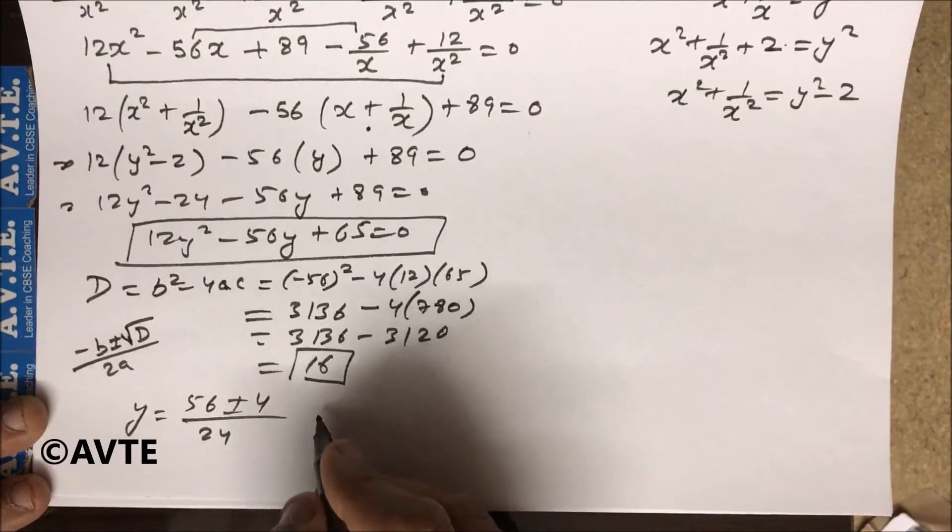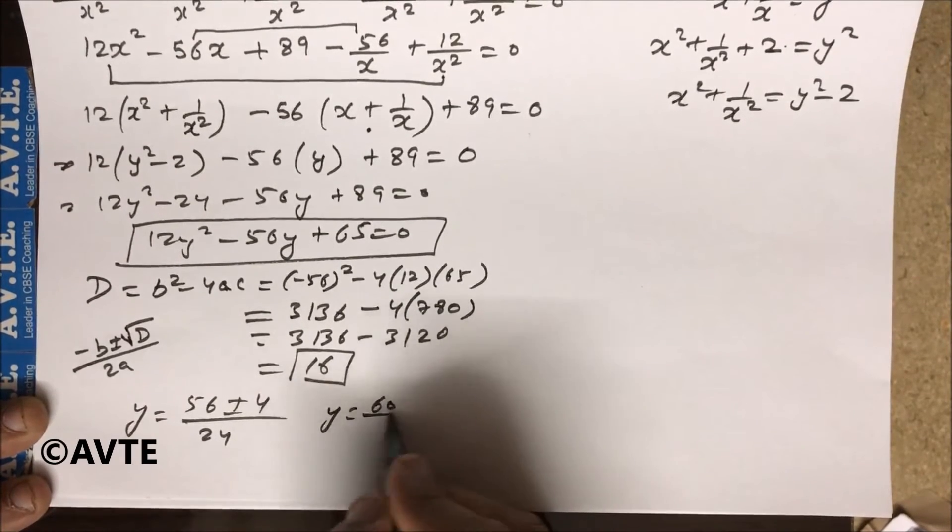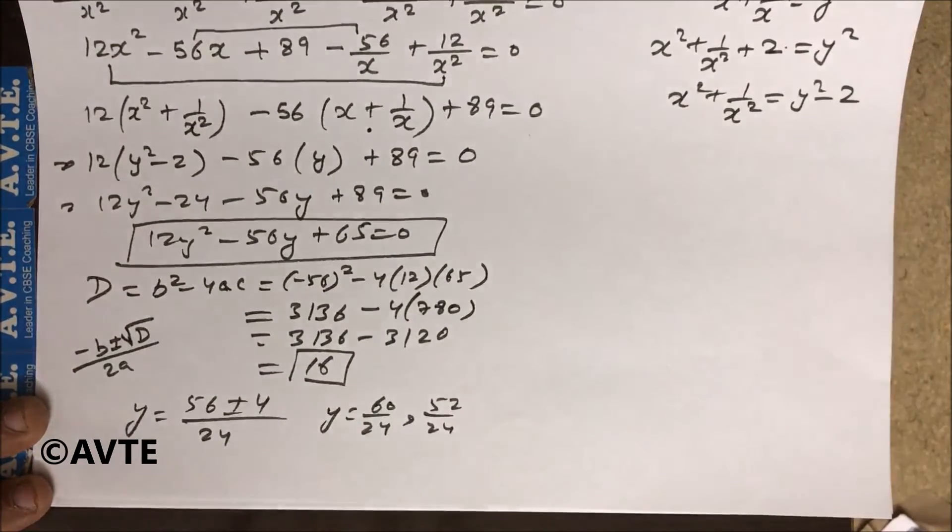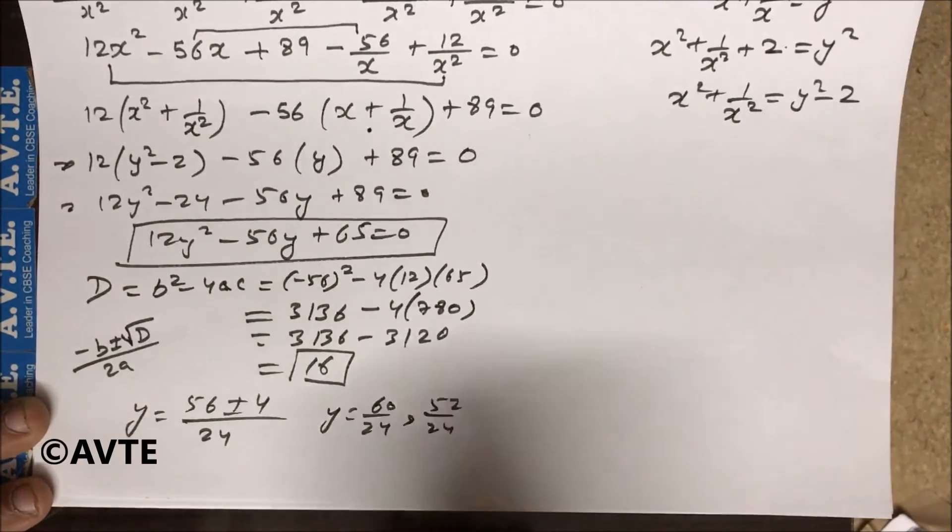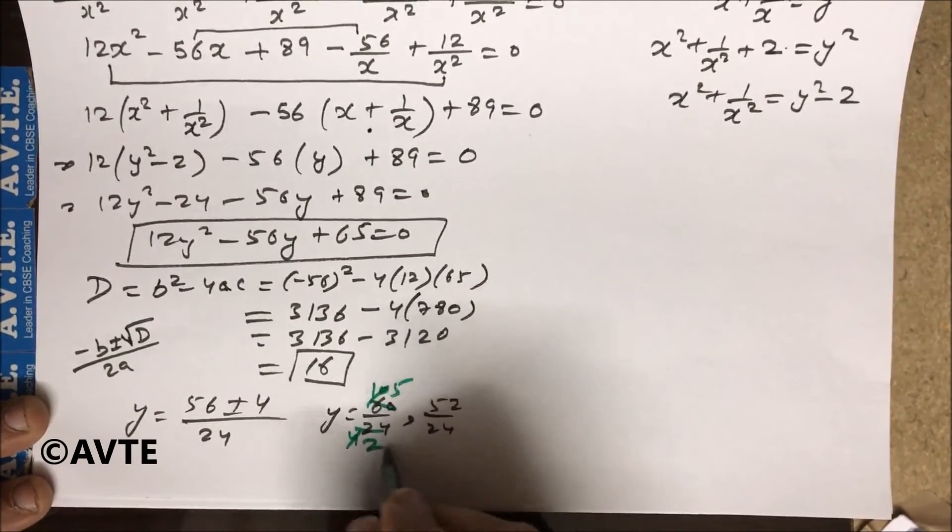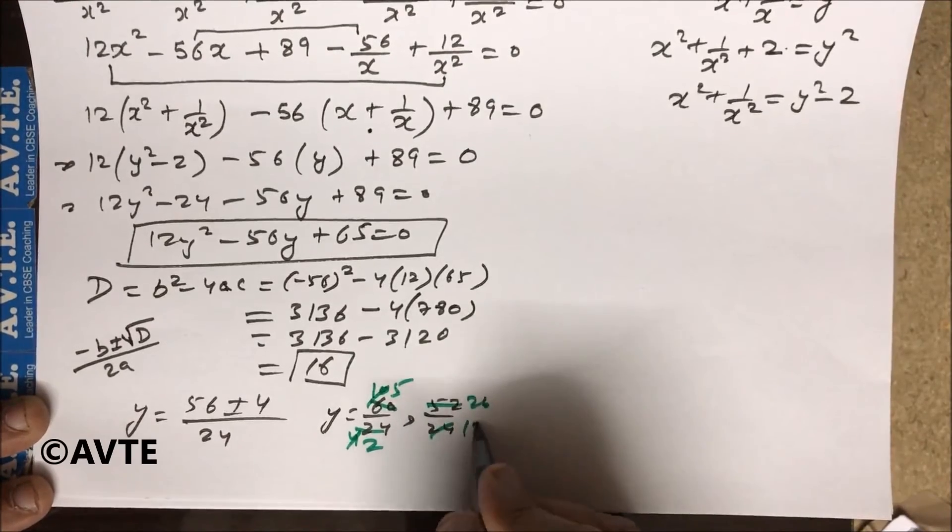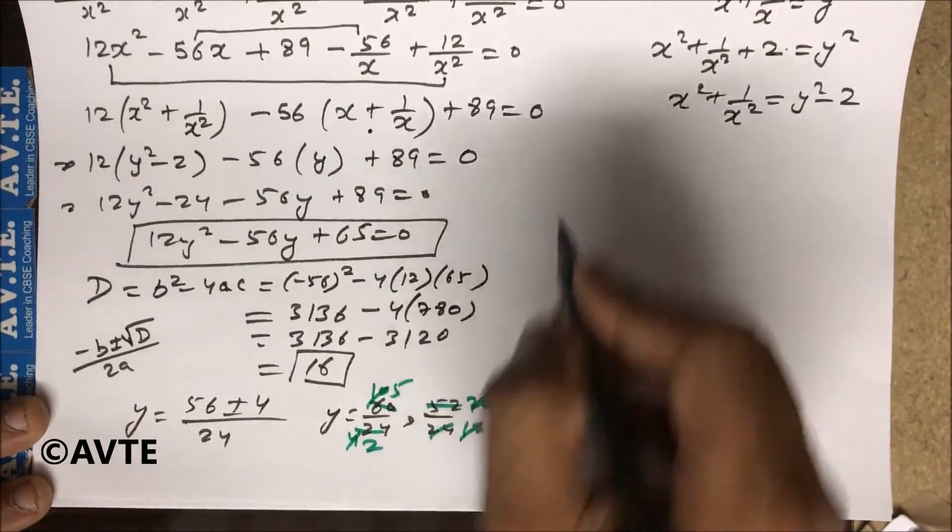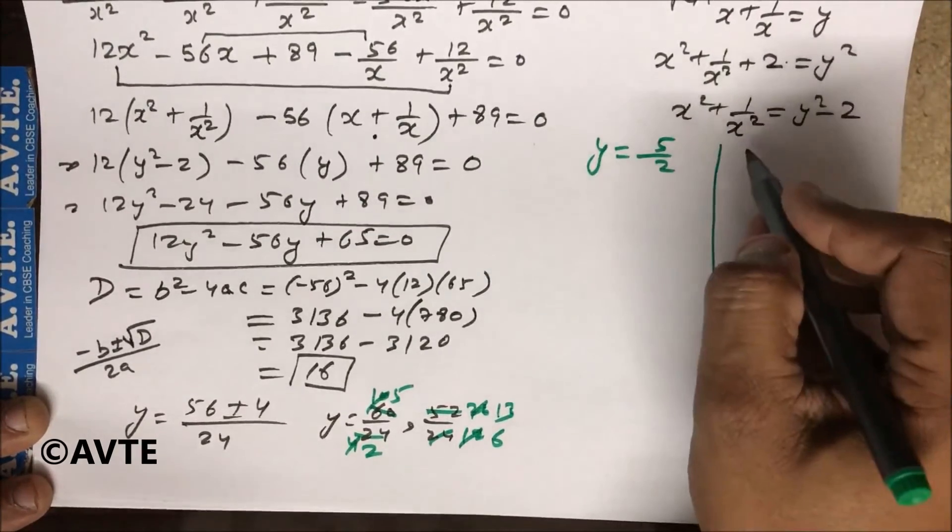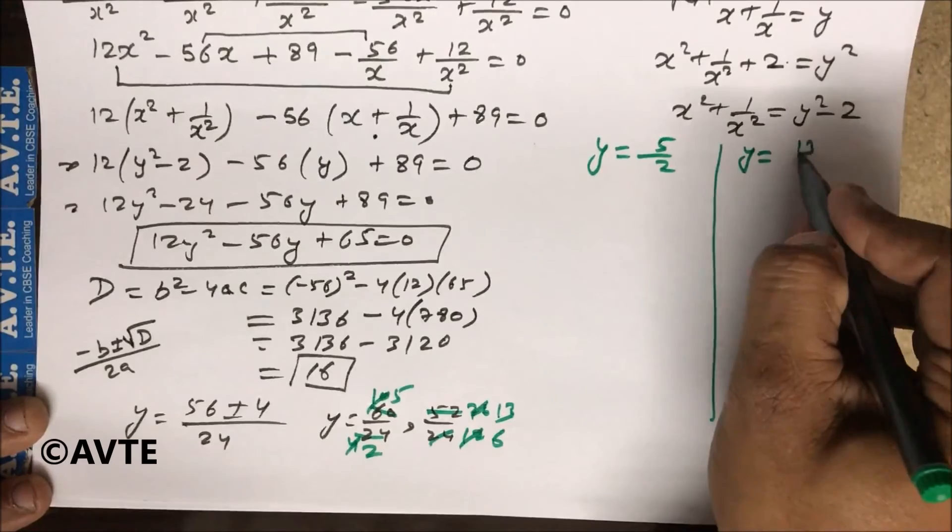So your value of y is 60/24 and 52/24. So if you cancel them your answer is 5/2 and it is 26/12 which is 13/6. So answer of your y is 5/2 and answer your y is 13/6.